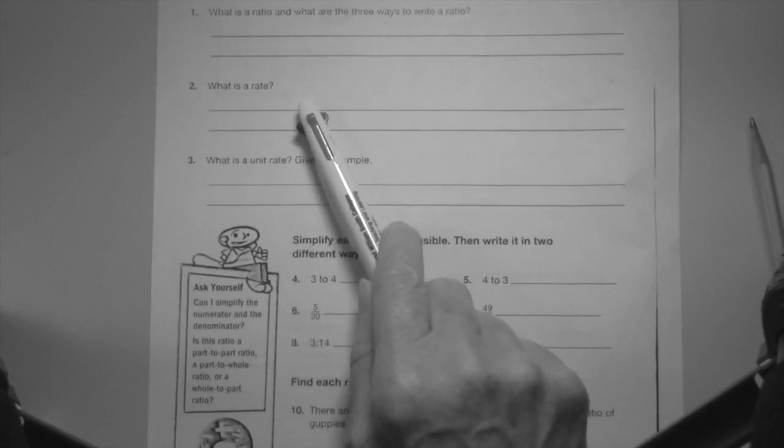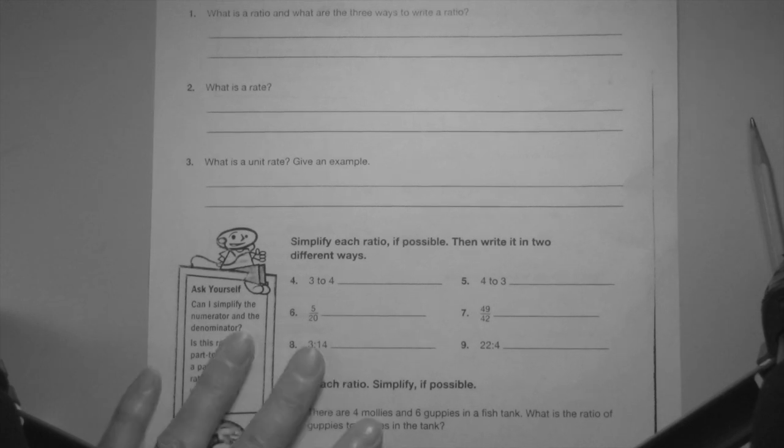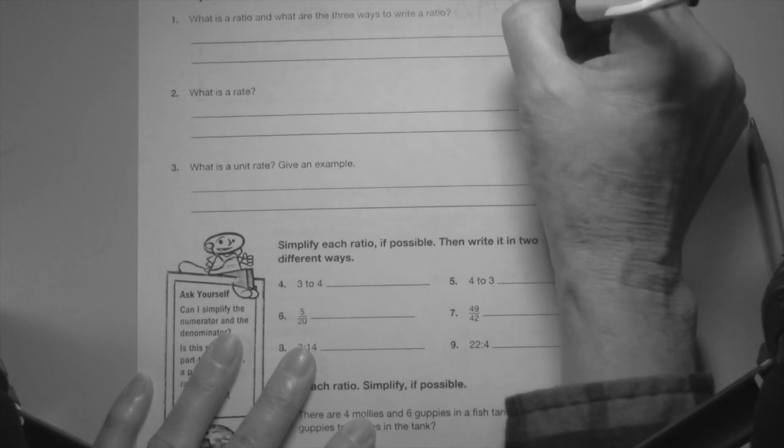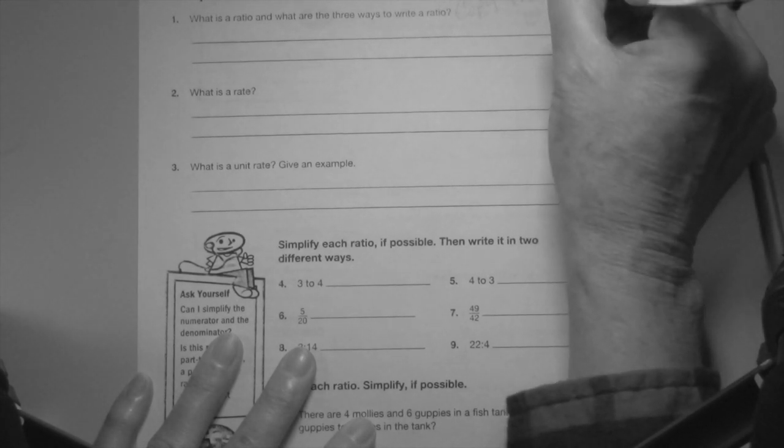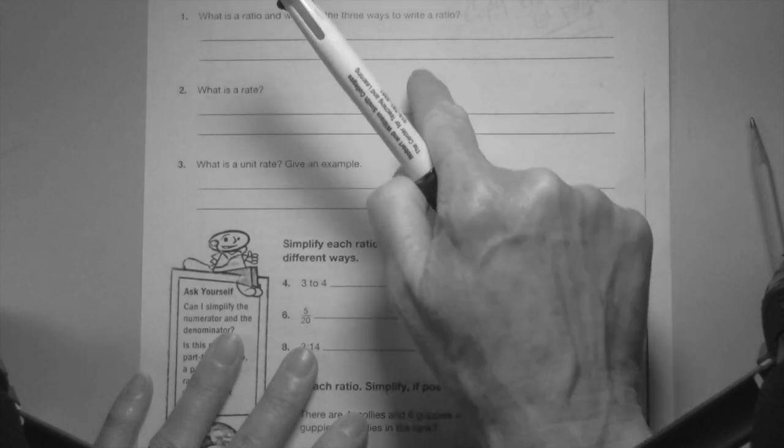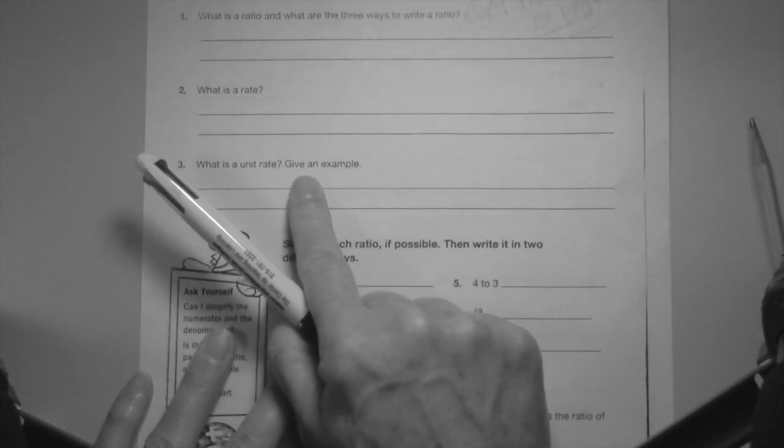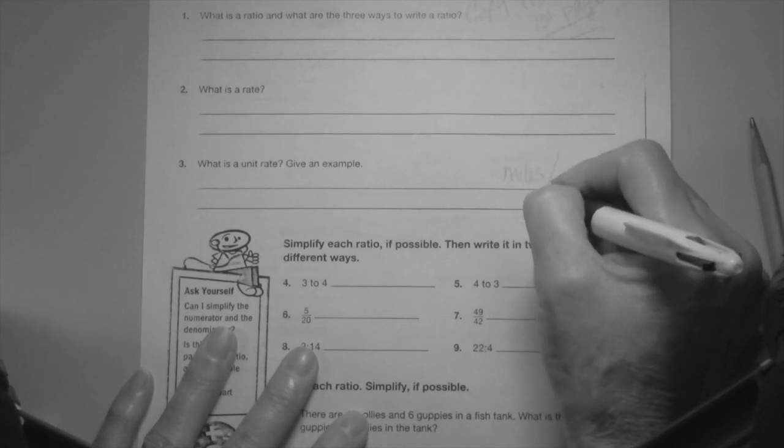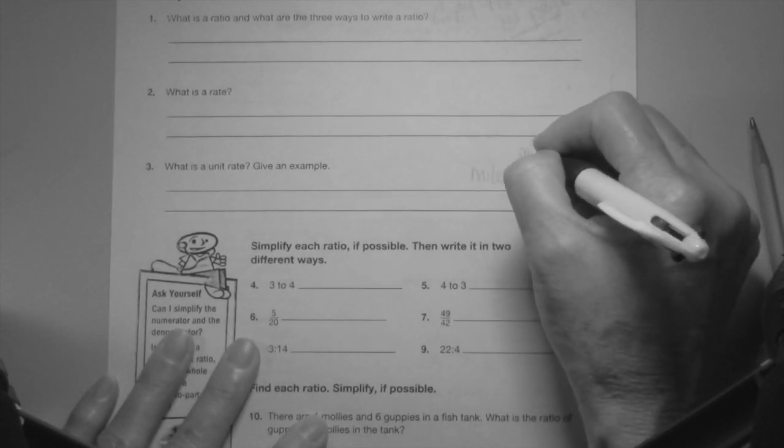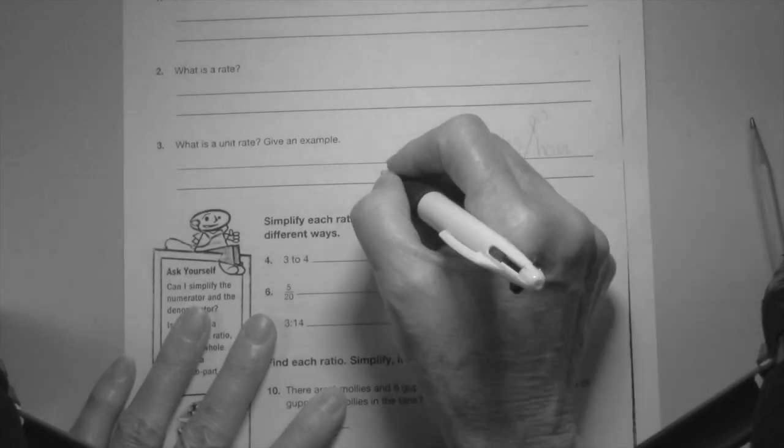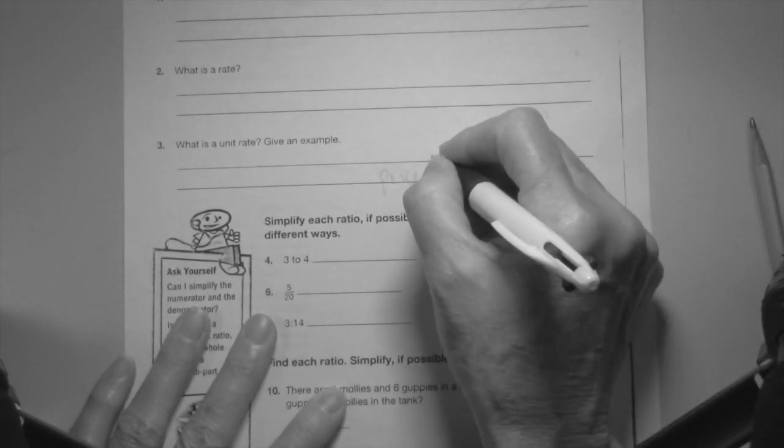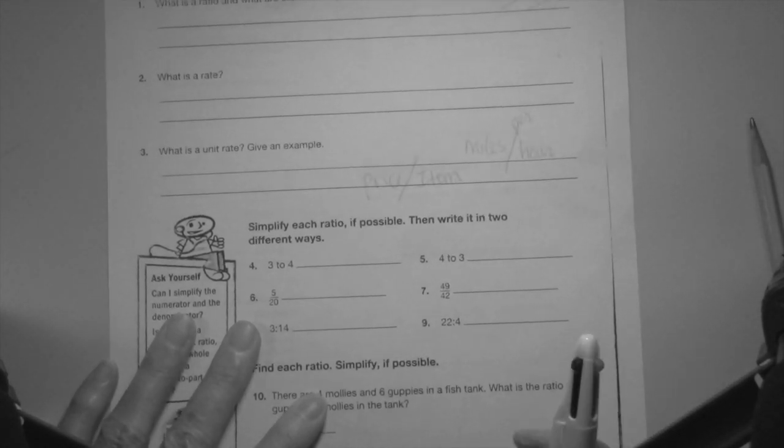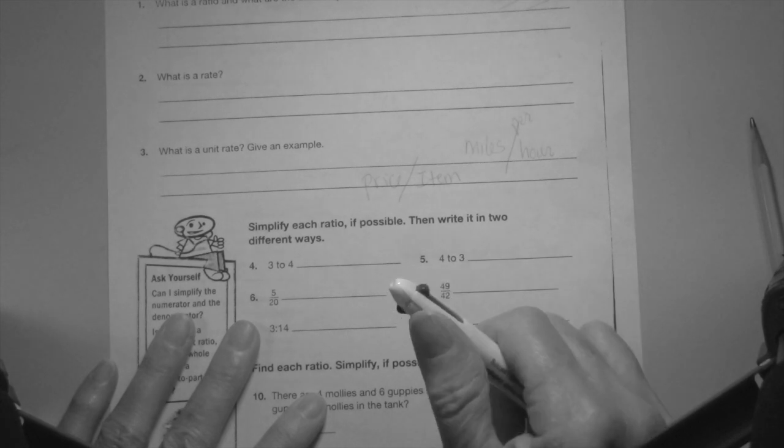What is a rate? Copy from first page, I'm not writing this, you can do this, that's simple definitions. What is the unit rate? Give an example. I'll give you an example: miles per, this is the per line, per hour, or price per item. Two very common examples.